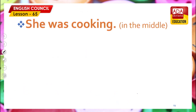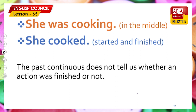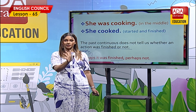Let's look at two examples: 'She was cooking' — that means she is in the middle of something, she started cooking before the point I'm referring to and she's still in the middle. But when you say 'she cooked,' it means started and finished. Past continuous does not tell us whether the action was finished or not. The only thing you know is it started before the time you are referring to, but perhaps it was finished, perhaps not.